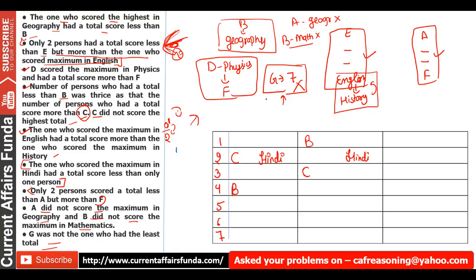Now let's pick the key points to work with. One related point is that Geography comes below B. We don't know exactly how far below. Let's look at the two fixed-gap clues: from E with a gap of two we get the English scorer, and from A with a gap of two we get F. Let's pick one of these points and start.